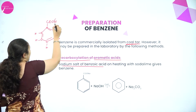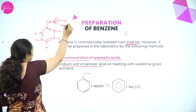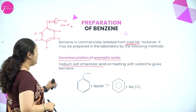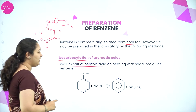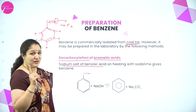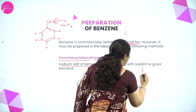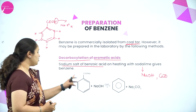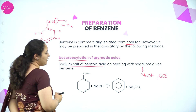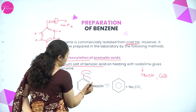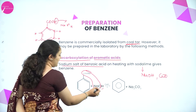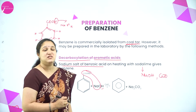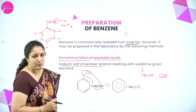In benzoic acid, the hydrogen is replaced by sodium or potassium, making it the sodium salt of benzoic acid. We take the sodium salt of benzoic acid and heat it with soda lime — a mixture of sodium hydroxide with calcium oxide. It gives benzene. Na2CO3 is liberated, and the hydrogen goes in place of COONa to give the benzene structure. This is the first method of preparation of benzene.